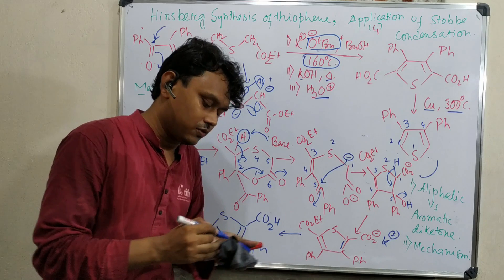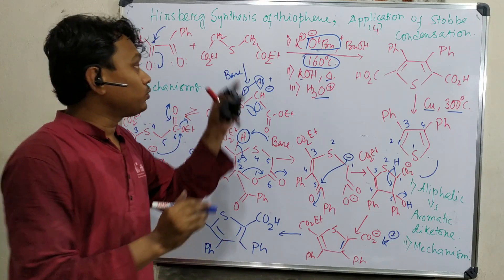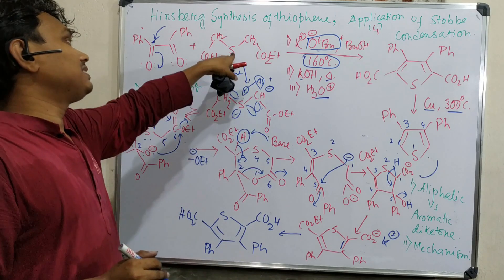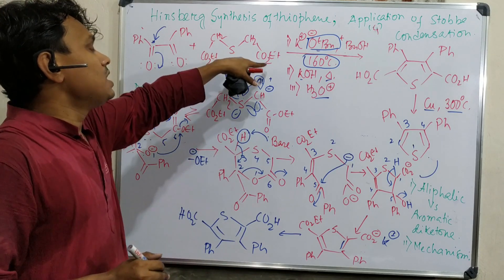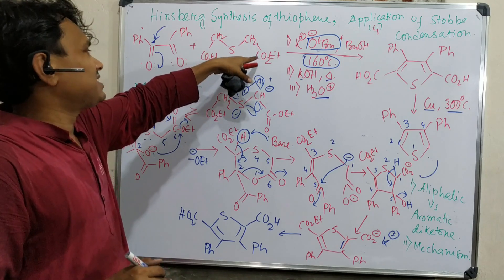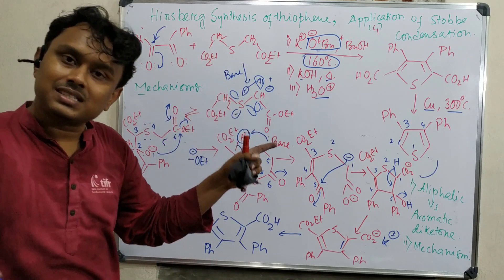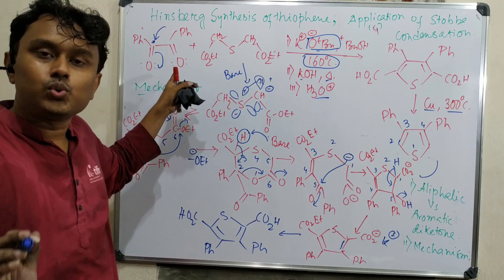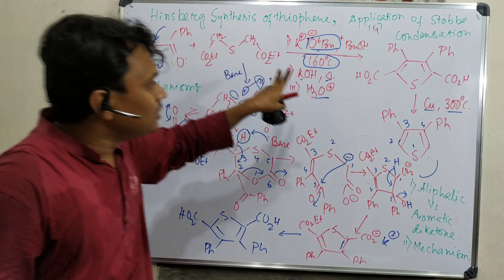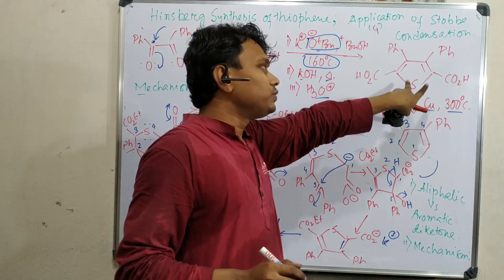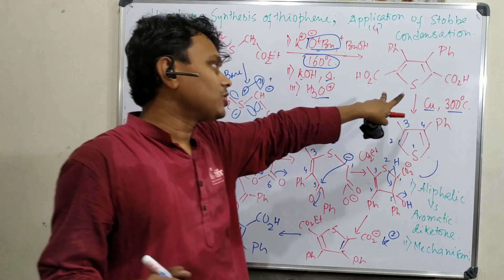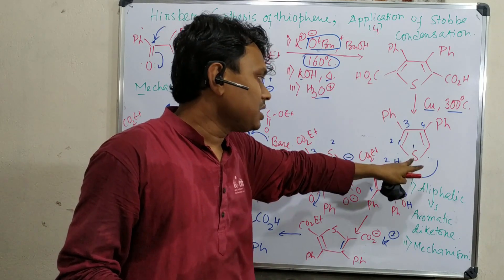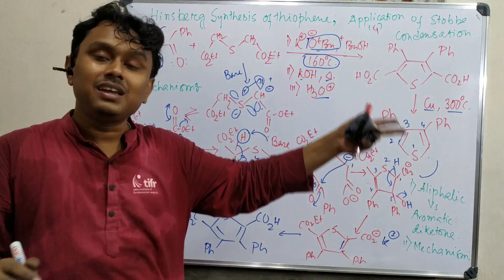Remember this thiophene is attached to two phenyls, so this is 3,4-diphenyl substituted thiophene. In this Hinsberg synthesis of thiophene, we can ultimately have 3,4-diphenyl or diaryl substituted thiophene. What we have learned today: compared to Stobbe condensation we learned previously, if we use a sulfur-bridged 1,5-diester, it can undergo Stobbe condensation with a 1,2-aromatic dicarbonyl compound and ultimately produces thiophene dicarboxylic acid, which under subsequent heating may provide the 3,4-diphenyl substituted thiophene.